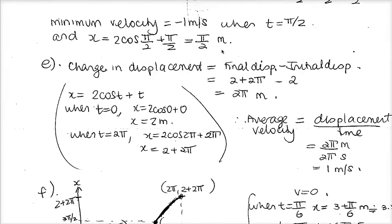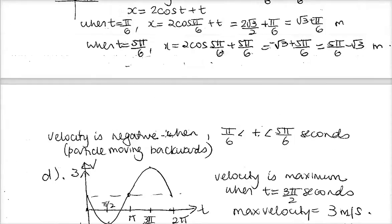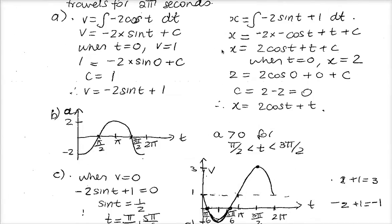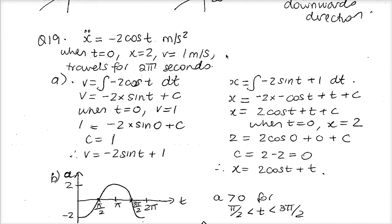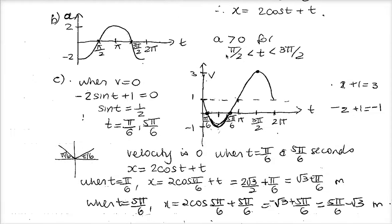Looking at earlier in the question — in part B you were given the acceleration curve. Acceleration is negative up to π/2. From π/2 to 3π/2, acceleration has positive values. From 3π/2 through to 2π, acceleration has negative values. So from time 0 to time π/2, acceleration is negative.